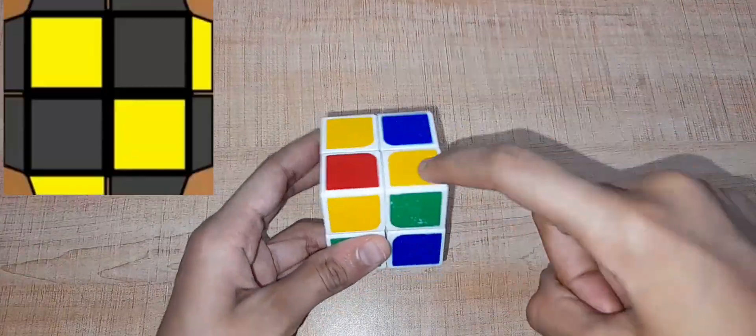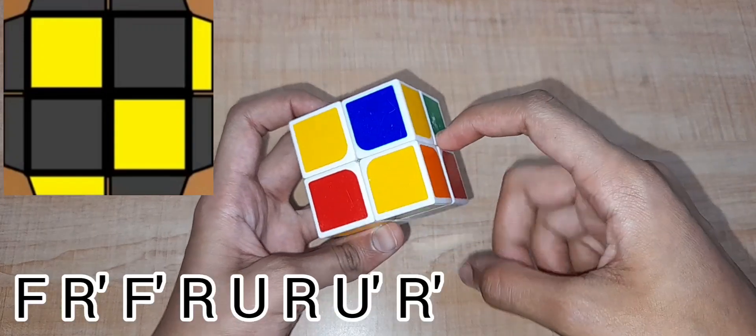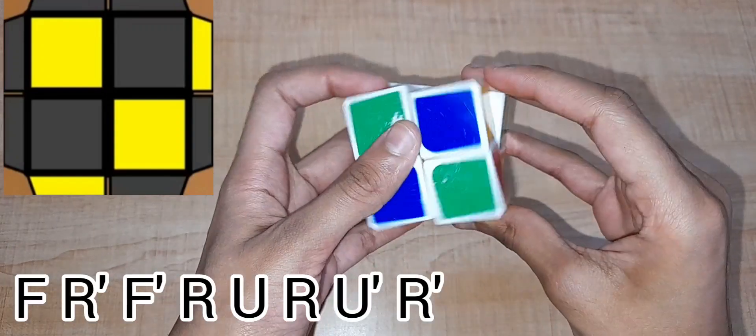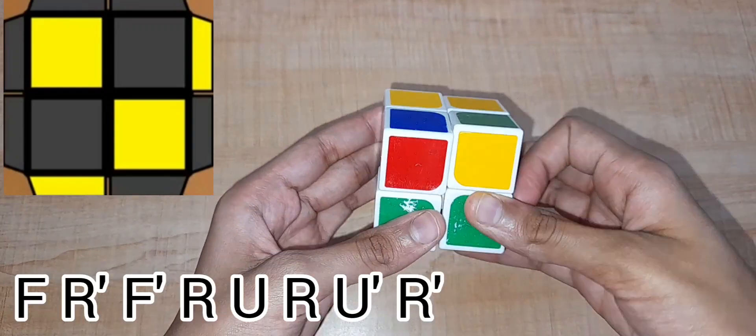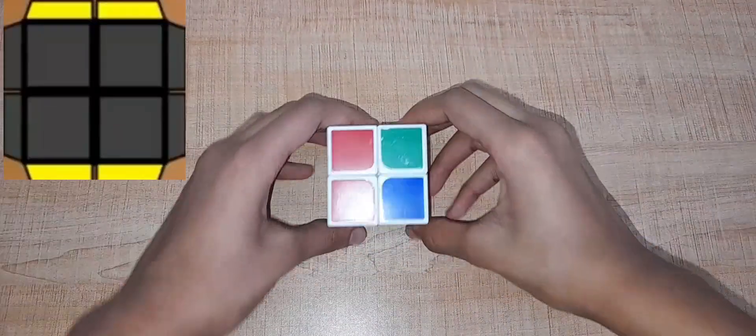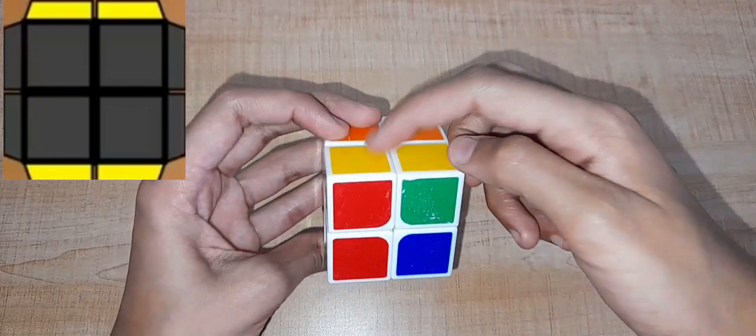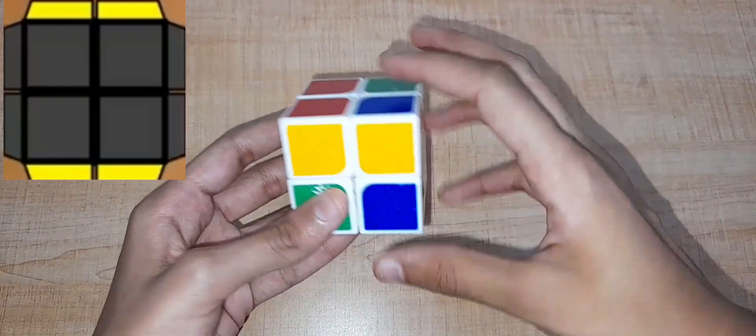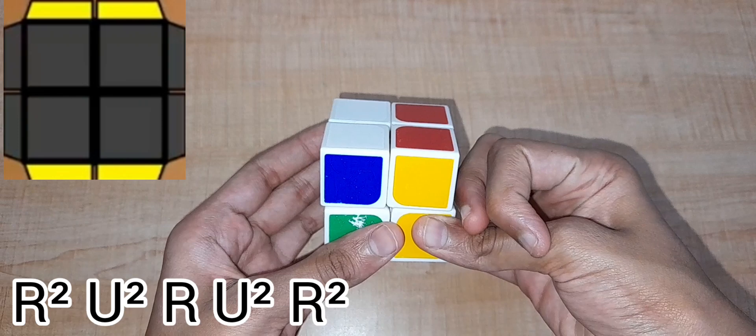If you have two stickers diagonal like this and your two other stickers are facing like this, do this. If you have no stickers up and you get two bars like this on the opposite side, do this.